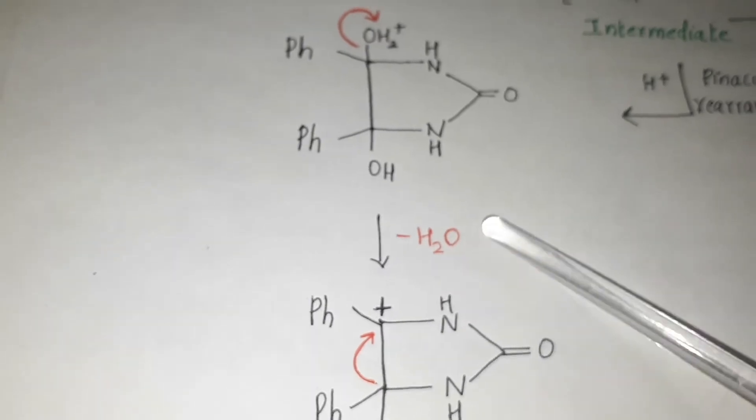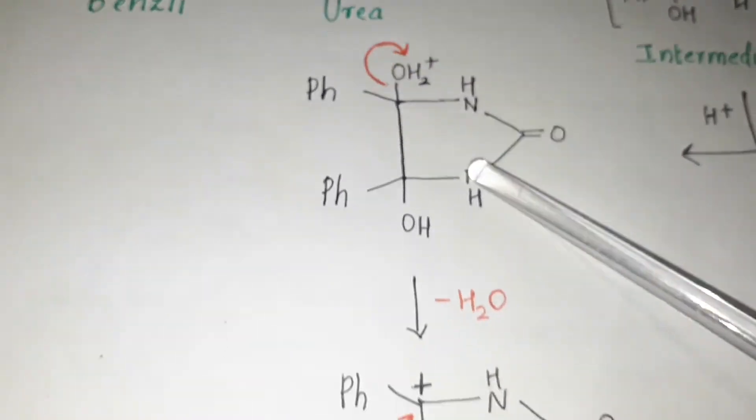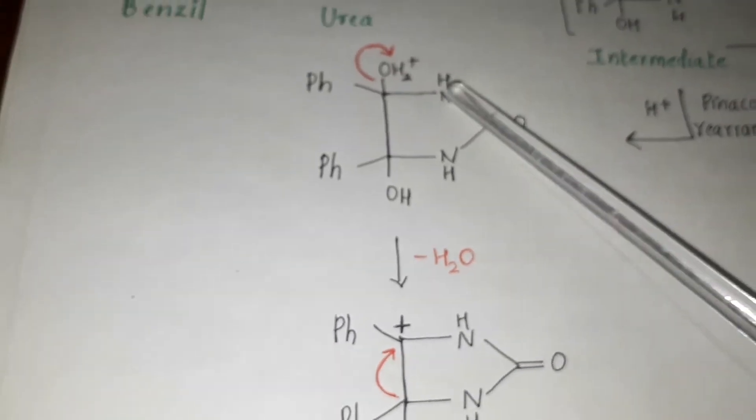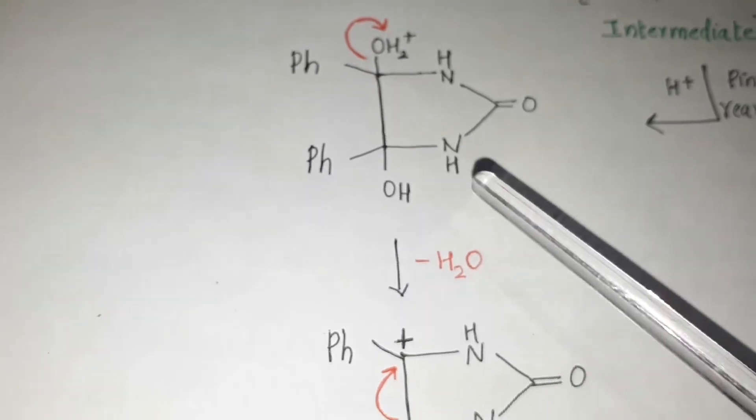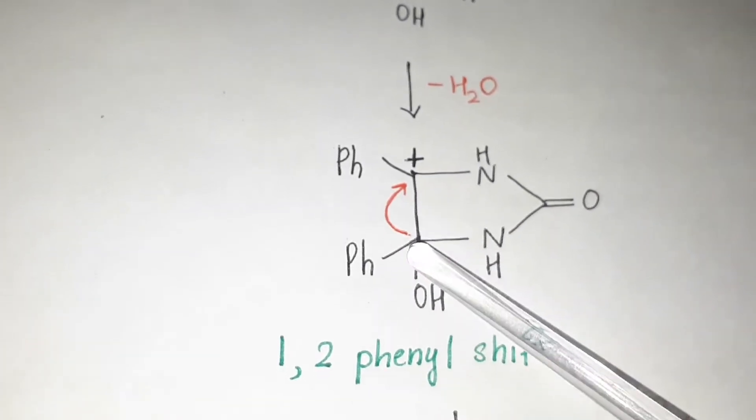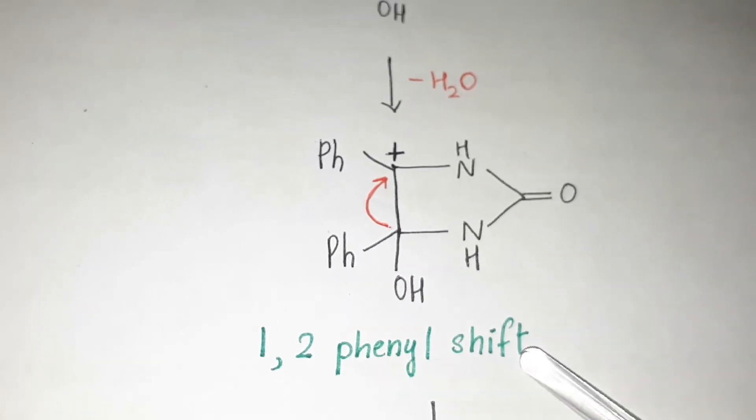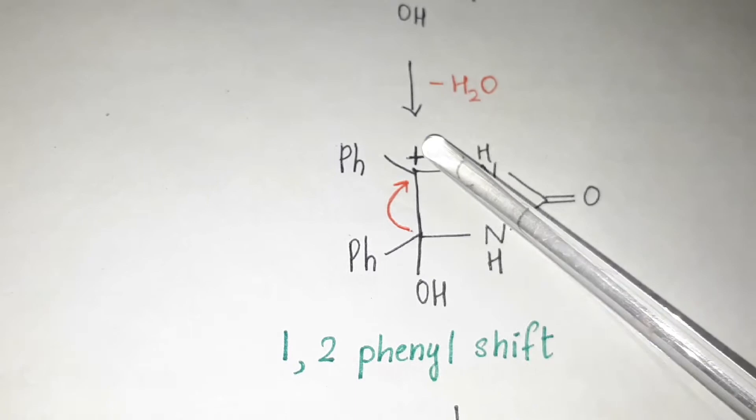H2O is lost - this OH2+ is lost in the form of H2O, and another intermediate forms. Here, instead of that OH2+, a positive charge comes (partial positive charge on the carbon), and here a 1,2-phenyl shift occurs.